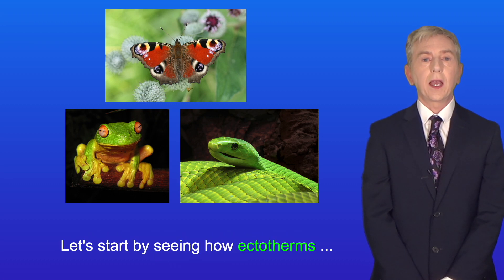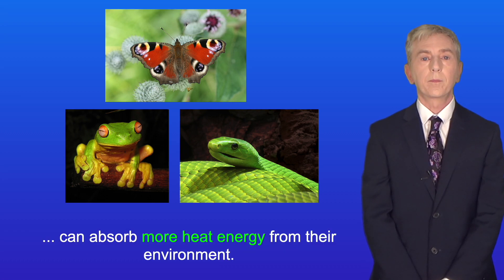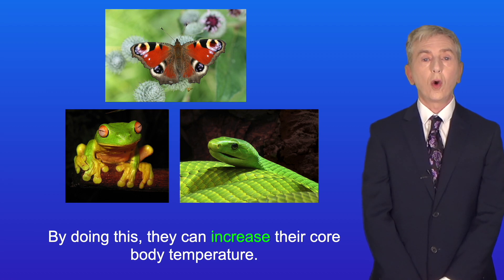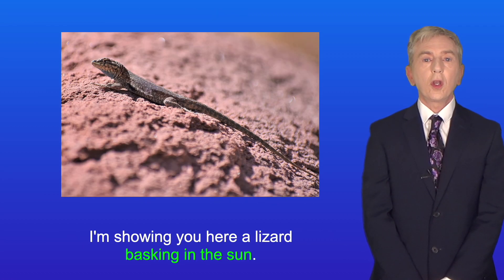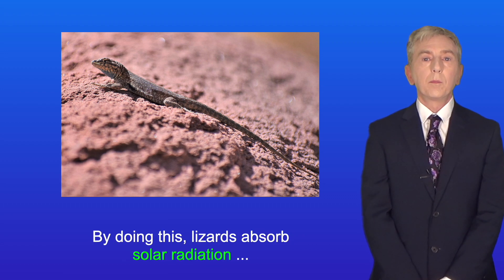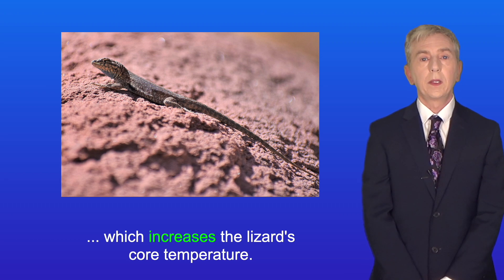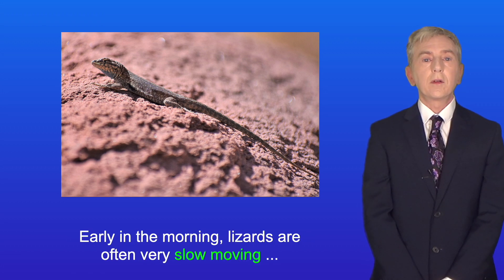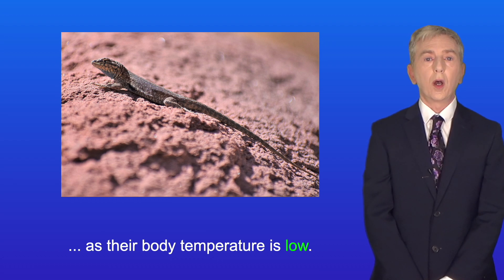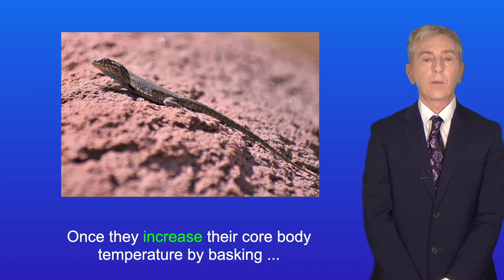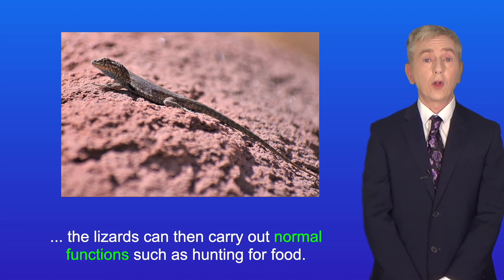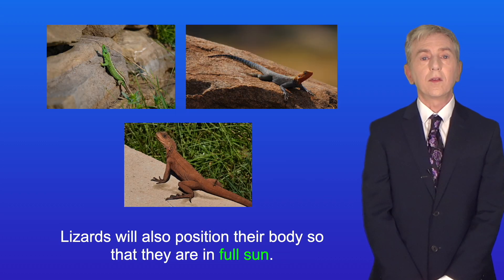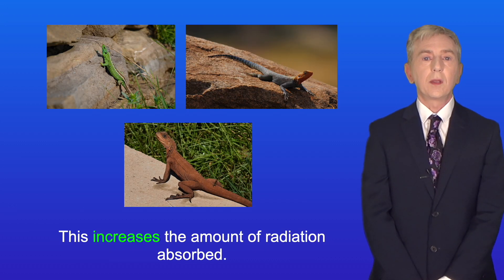Instead, ectotherms change their behavior. Let's start by seeing how ectotherms can absorb more heat energy from their environment — by doing this, they can increase their core body temperature. I'm showing you here a lizard basking in the sun. Lizards absorb solar radiation, which increases their core temperature, and they often do this to warm up at the start of the day. Early in the morning, lizards are often very slow moving as their body temperature is low. Once they increase their core body temperature by basking, lizards can then carry out normal functions such as hunting for food. Lizards will also position their body so that they're in full sun, which increases the amount of radiation absorbed.